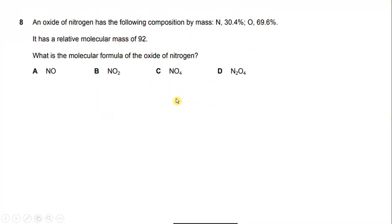Number eight, an oxide of nitrogen has the following composition by mass N 34.4% and oxygen 69.6%. It has a relative molecular mass of 92. What is the molecular formula of the oxide of nitrogen? So the question we want to know about the molecular formula of the oxide of nitrogen. Before we proceed to the molecular formula, let's look into what is the empirical formula.